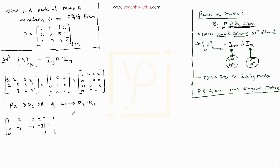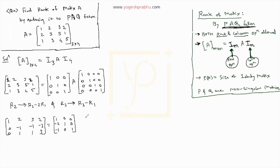Now we perform R3 becomes R3 minus R1. So: 1 minus 1 is 0, 3 minus 2 is 1, 4 minus 3 is 1, 5 minus 2 is 3. And on the I₃ matrix: 0 minus 1 is minus 1, 0 minus 0 is 0, and 1 minus 0 is 1. So those are the row operations performed on both matrices.